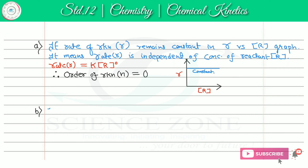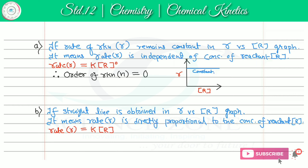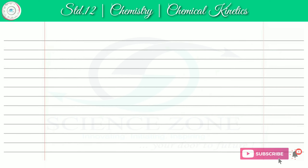Second case: if a straight line is obtained in the graph of rate versus concentration, it means rate R is directly proportional to the concentration of reactant. So Rate = K · [R]¹. We predict the order of reaction N = 1. The nature of this graph will be a straight line passing through the origin when plotting rate R versus concentration [R].